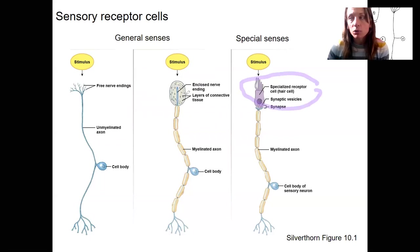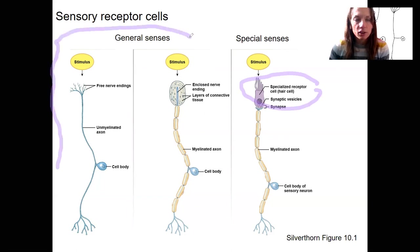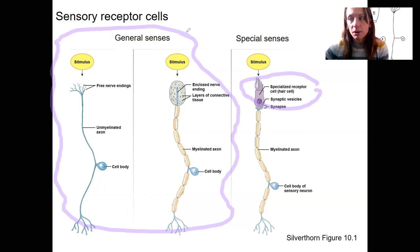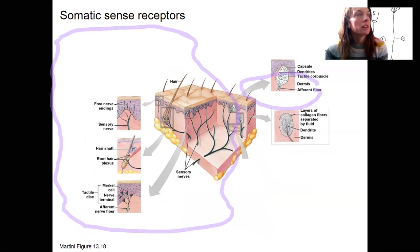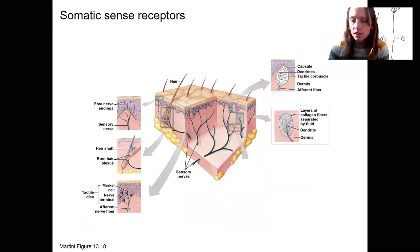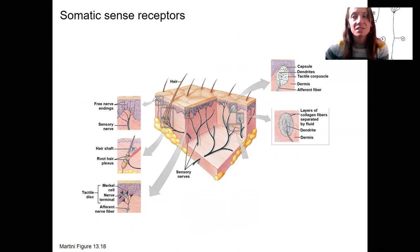Now I want to talk about a few examples of general sense receptors and look at a section of the skin to see what's there. The integumentary system is what we're going to be looking at. In a section of the skin, embedded in the dermis and epidermis, there are various sensory receptors.